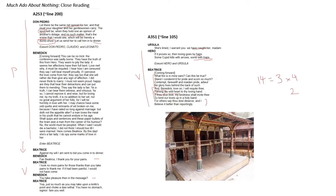They both start by coming forward from their respective hiding spots. You'll note down here in this picture of a reconstruction of the Globe Theatre stage that there are these two supporting pillars. These pillars are really useful during the play because you can have Beatrice, for example, hiding over here, whilst Ursula and whoever are speaking over here. Afterwards, Beatrice can come out and go into her soliloquy.